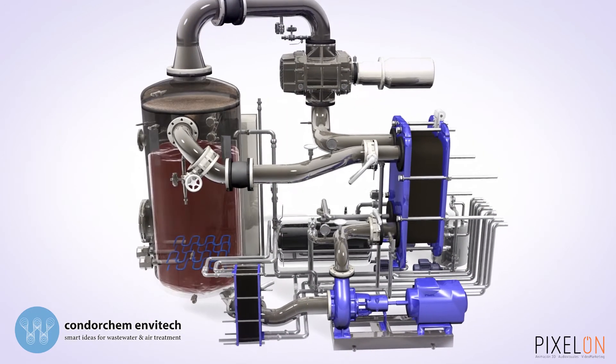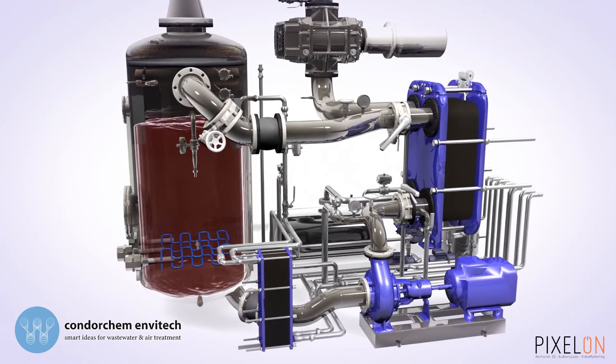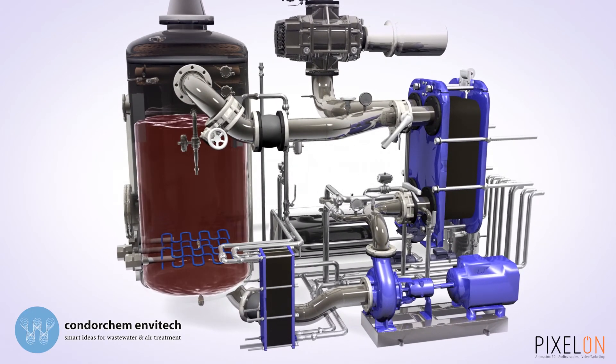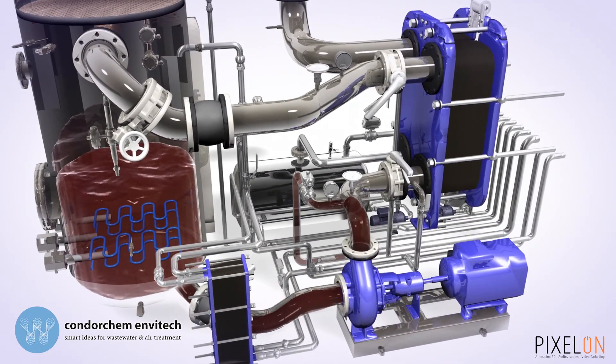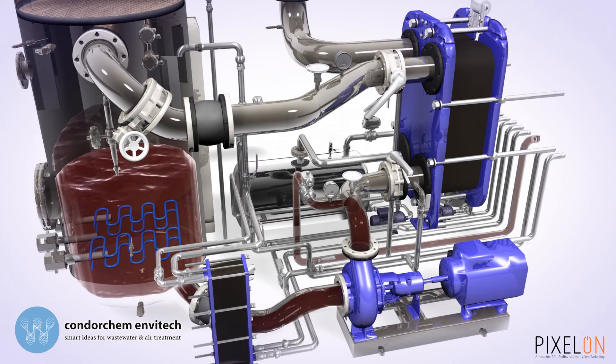As it evaporates, the concentration of the waste in the evaporation boiler increases. Programmed partial discharges of concentrate are performed by the equipment's recirculation pump.